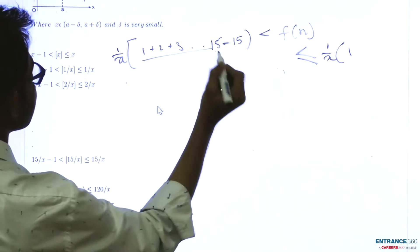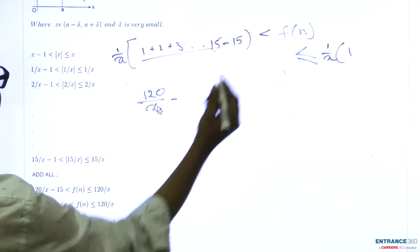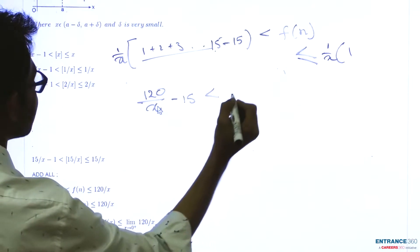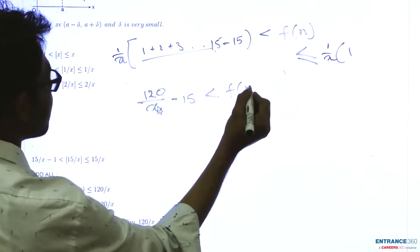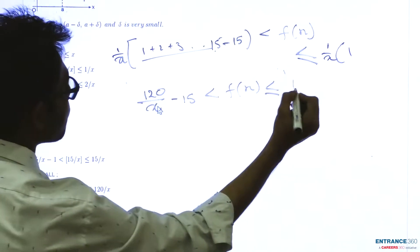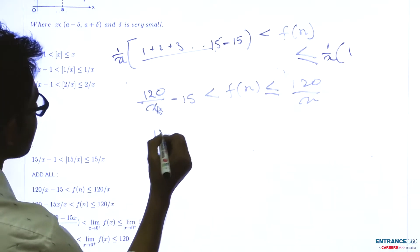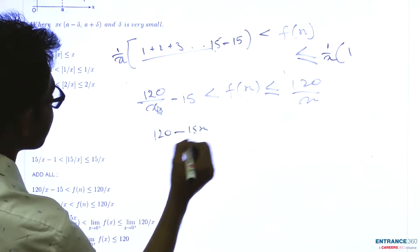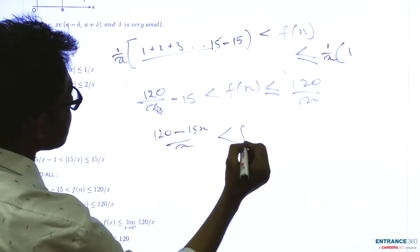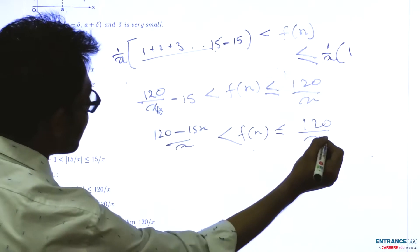Now, the summation of this is 120 divided by x minus 15, which is less than f(x), which is less than or equal to 120 divided by x. This becomes (120 - 15x)/x less than f(x) less than 120/x.